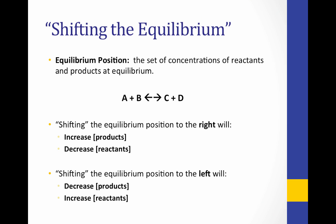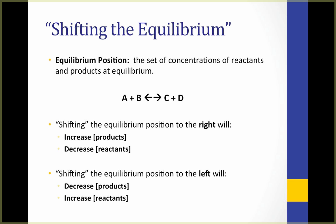On the other hand, if we shift the equilibrium position to the left, we're doing the opposite. We're decreasing product because they're being used to make more reactant. Our new equilibrium position will have more reactant than before and less product than before.